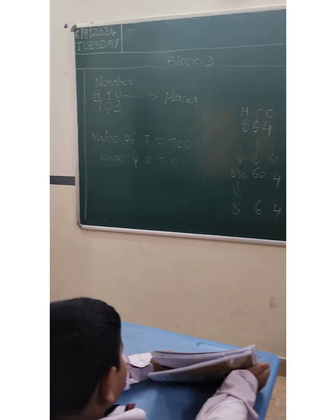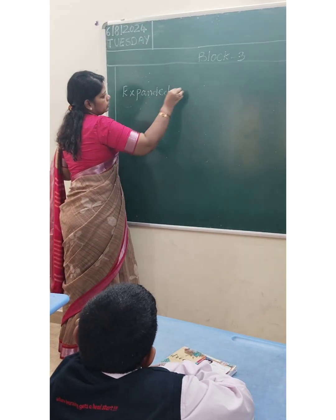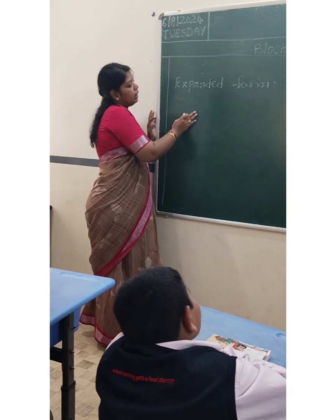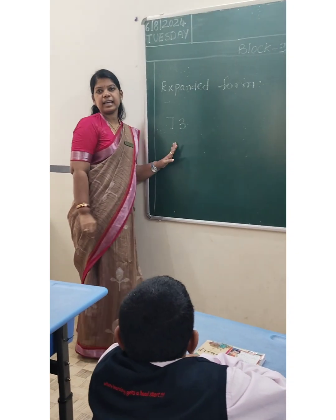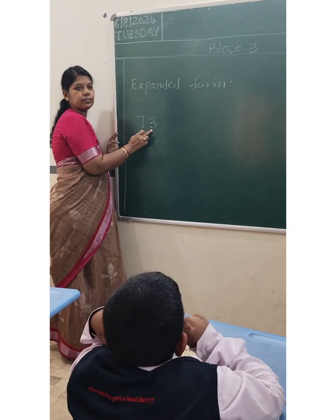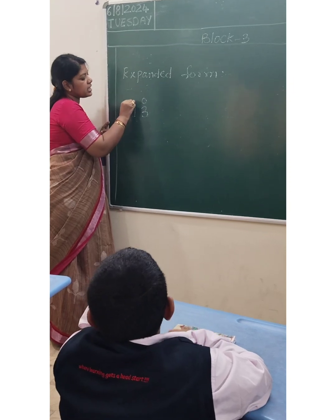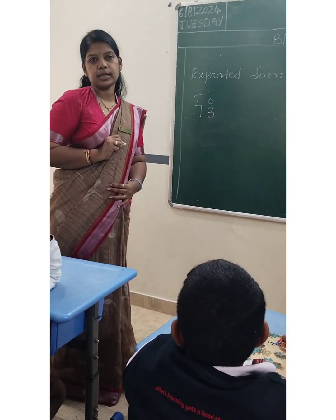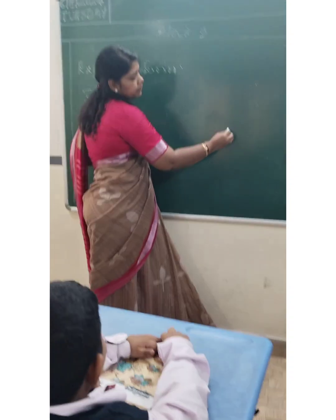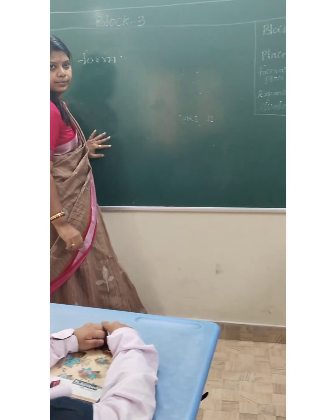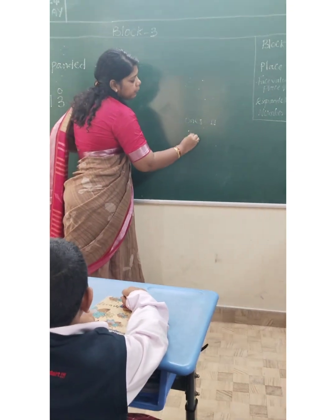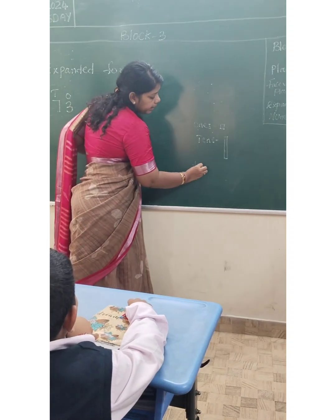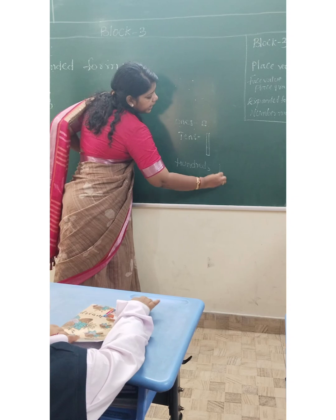Next, expanded form. If I write the number seventy-three — three is in 1's place, seven is in 10's place. We expand the number using blocks and also using the digits. For ones we use a small square box; for tens we use a rectangle; for hundreds we use a large square box.